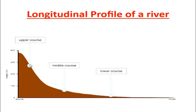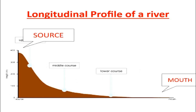You know that the one in the highland area is the upper course, followed by the middle course, and then lastly we have the lower course. At times they also ask you to clearly indicate where you would find the source of the river in the longitudinal profile, and where you would find the mouth. The mouth you find where the river is in the lowland area, where it enters into an ocean, and the source you find where the river begins.